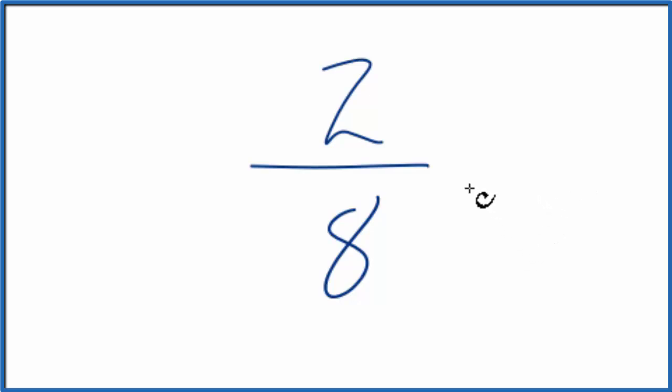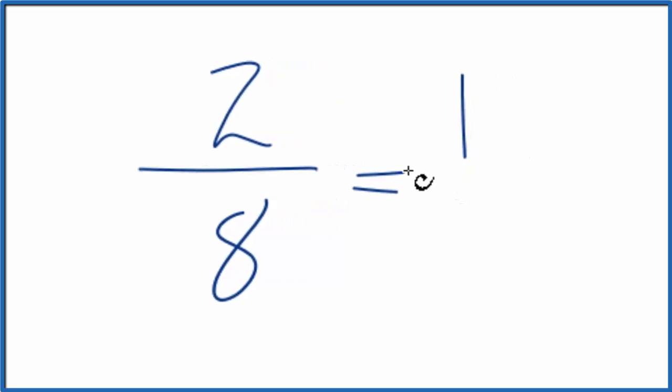The way we do that, we find a factor that's common to 2 and 8. It goes into 2 and 8 a whole number. So it looks like 2 goes into 8 four times and into itself once. So 2 divided by 2 is 1, and then 8 divided by 2 is 4.